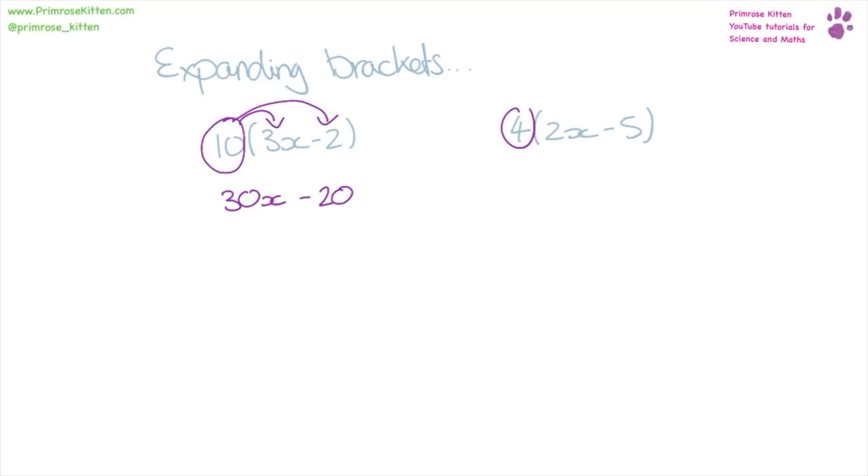Again, we take the 4, which is outside the brackets, times by everything inside the brackets. So 4 times 2 is 8x minus 20.